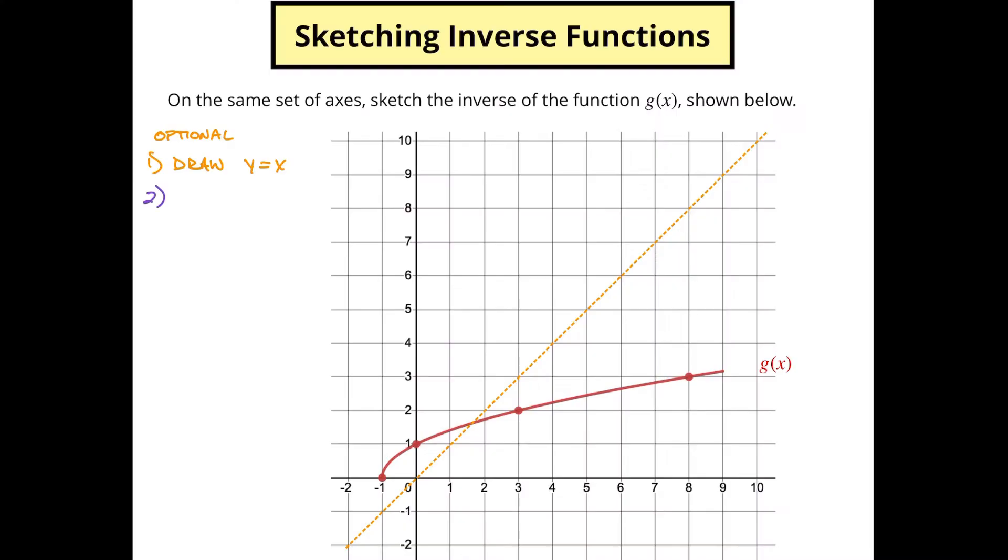After that, I like to find points on my function. Now this was nice enough where I actually had some already indicated on here. Your functions might not have these things already indicated. Maybe they do. So if yours don't, you want to look to see where they're crossing nice spots on your grid. That's what you're going to be looking for.